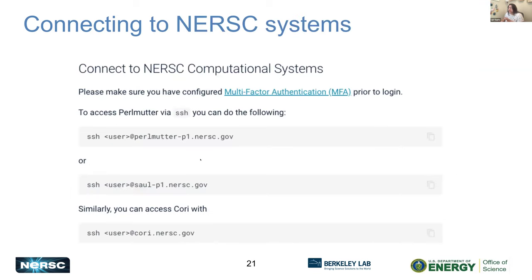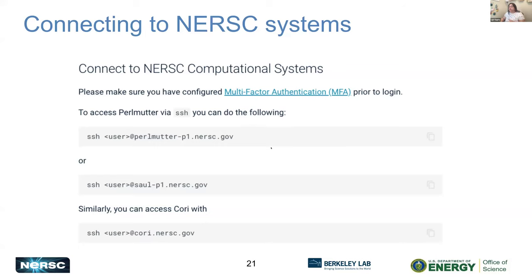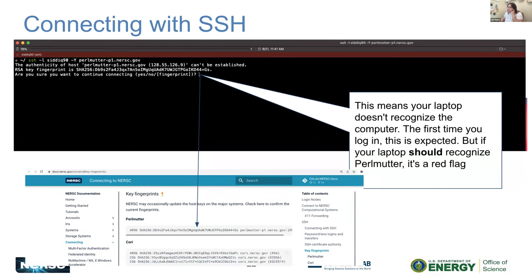Once you have your terminal, you'll need your MFA configured already. When you're ready to connect to Perlmutter, you'll type in the SSH command. Note: you don't need the dash P1 anymore — you'll just type perlmutter.nersc.gov or saul.nersc.gov. The first time you do this, you'll get a message asking you to confirm the server fingerprint. You can double-check the correct fingerprint in our NERSC documentation. This is expected the first time; if you see it again after that, please let us know.